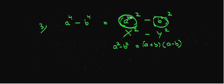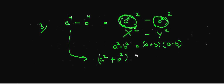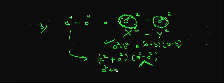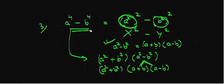In place of a we have a², so this will be (a² + b²)(a² - b²). Now, the same identity can again be used to further factorize (a² - b²). So the complete factorization will be (a² + b²)(a + b)(a - b). Thus, the factors of a⁴ - b⁴ are (a² + b²), (a + b), and (a - b).